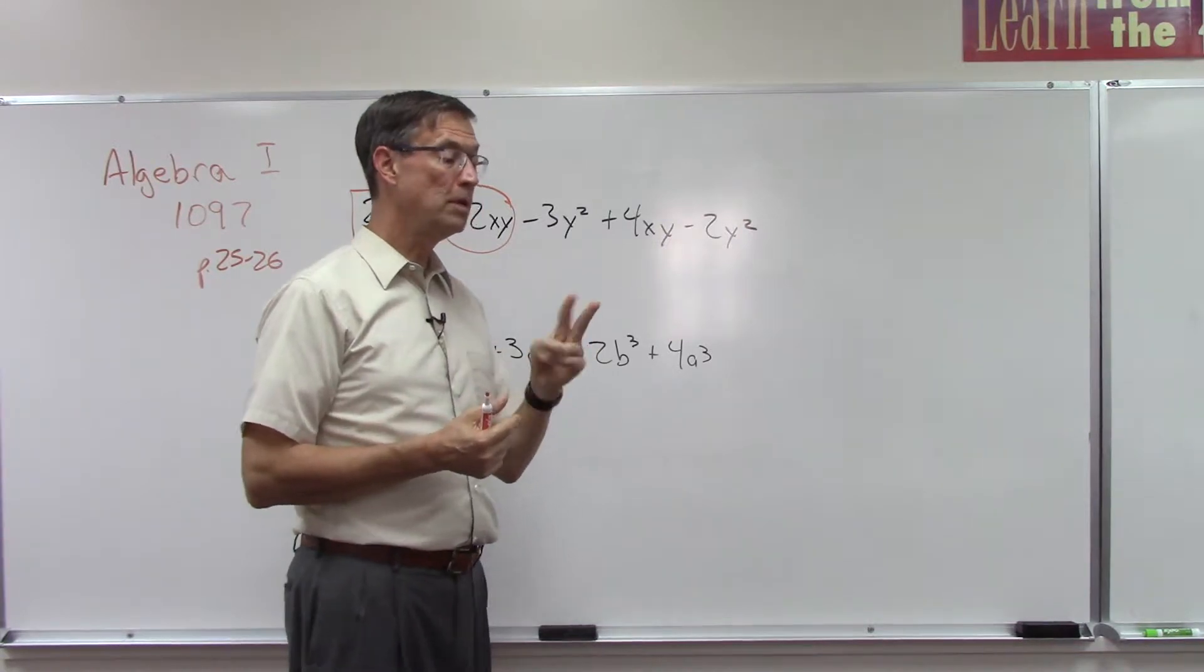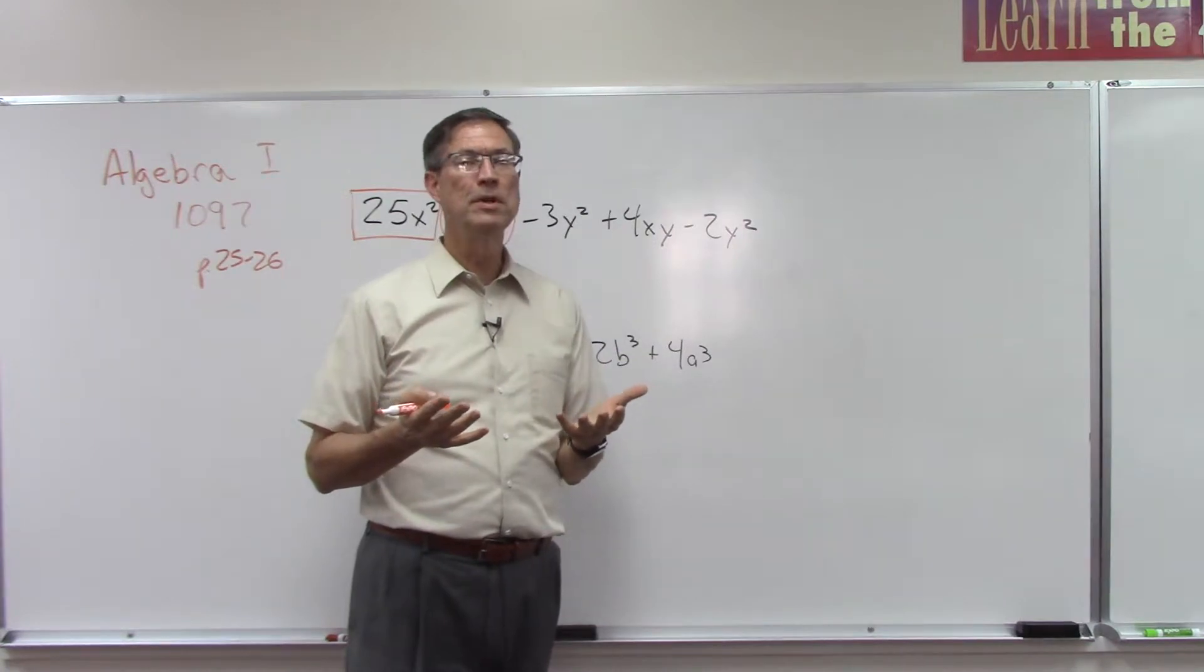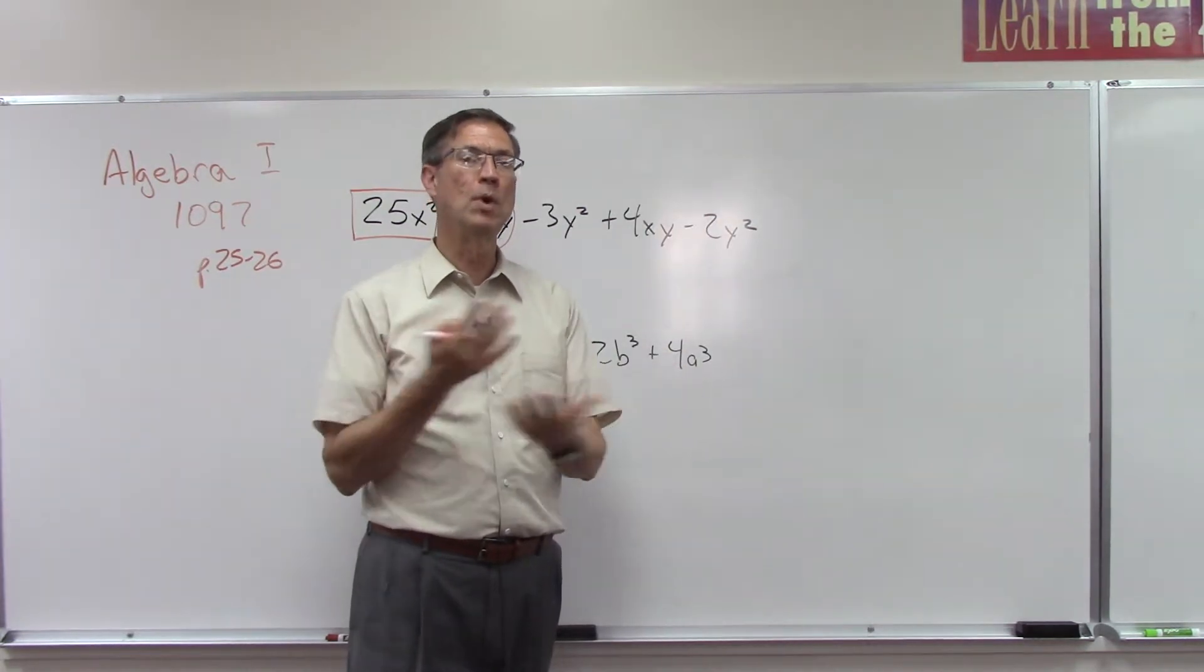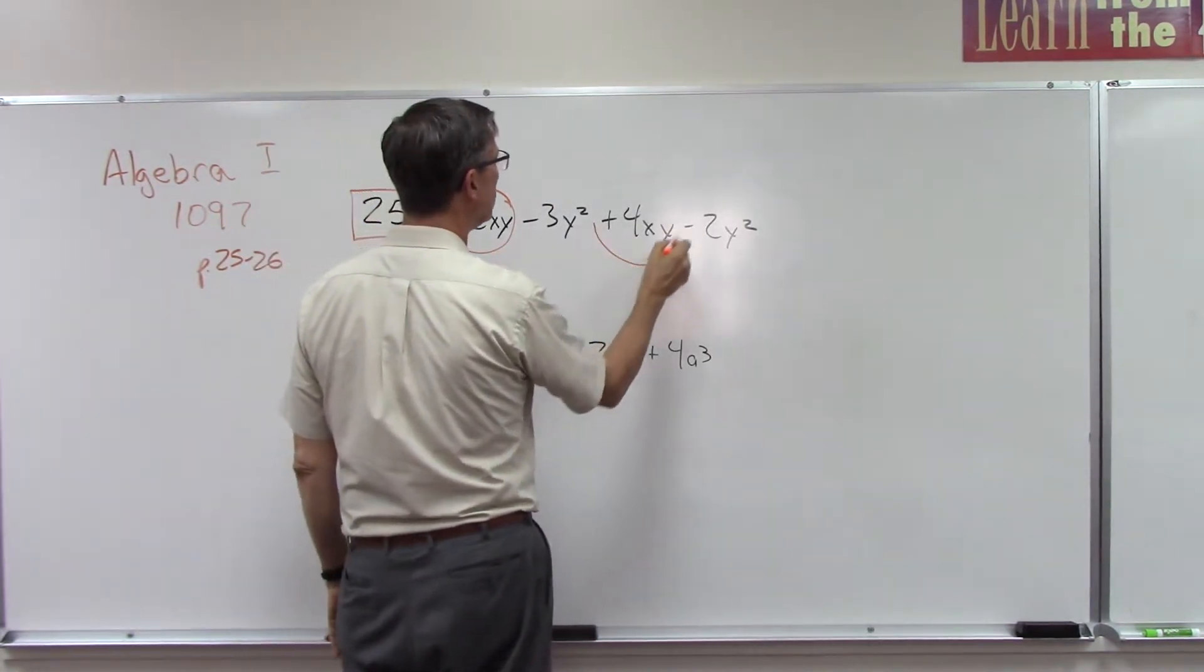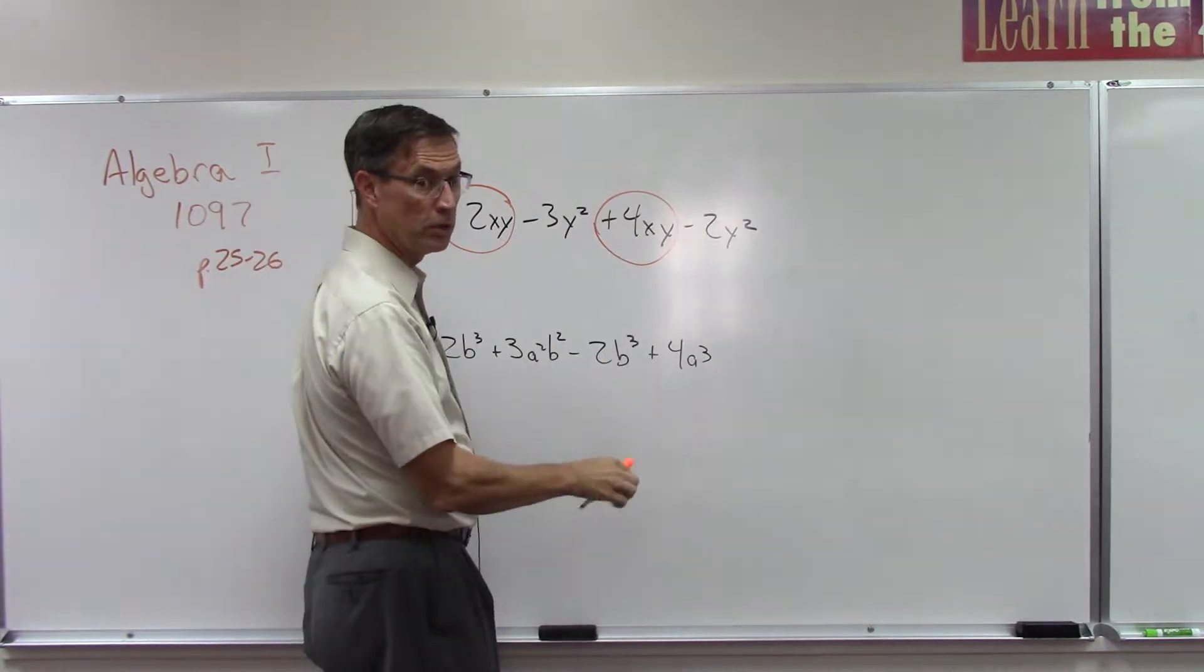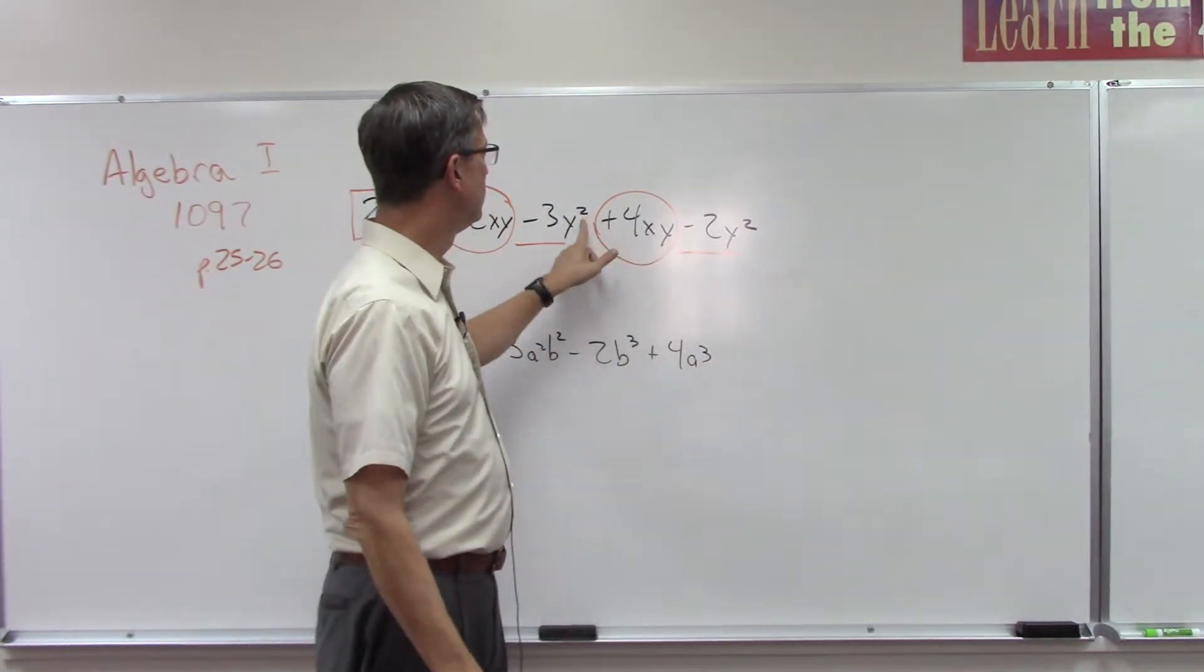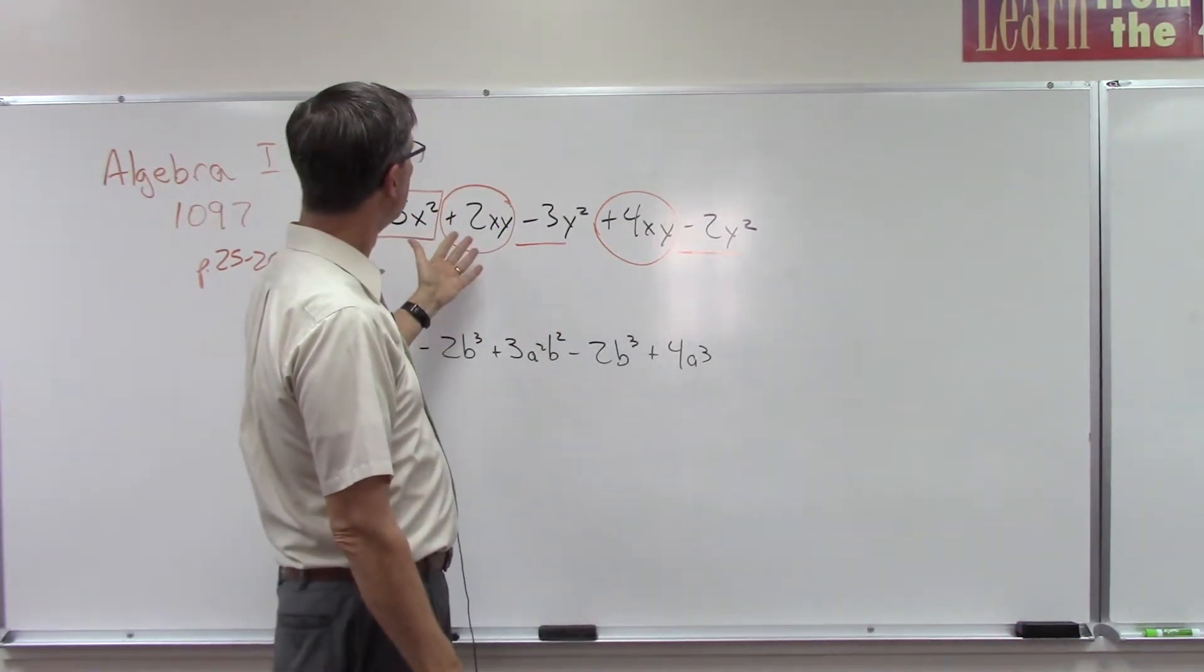The order doesn't matter because when we're multiplying, just like if I did 3 times 5 I would get 15, and if I did 5 times 3 I would still get 15. So the order doesn't matter. X times y is the same as y times x. So what I'm going to do is put a circle around this one so that I can visually see that these two are like terms. And then we'll underline these because these are like terms - both y's and they're both to the second power.